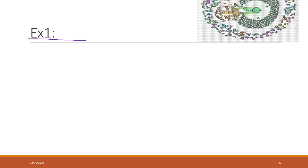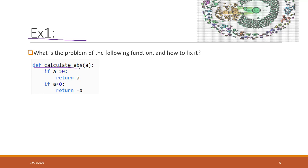Let's do some exercises about functions. First, let's say we have a function we want to define to calculate the absolute value of any given variable. The function is called 'calculate_absolute_value' and it receives one argument. If 'a' is greater than zero it returns 'a', and if 'a' is less than zero it returns negative 'a'.